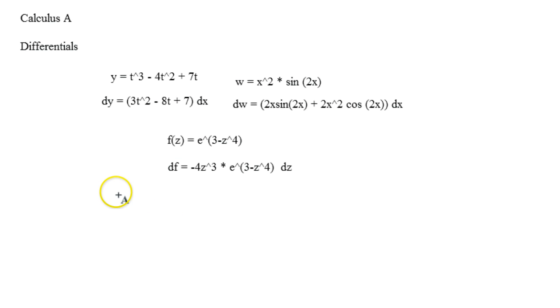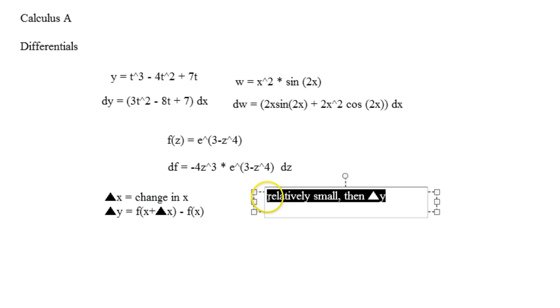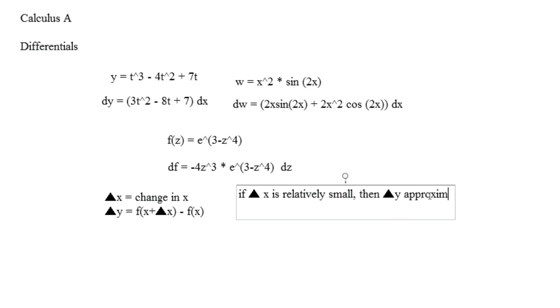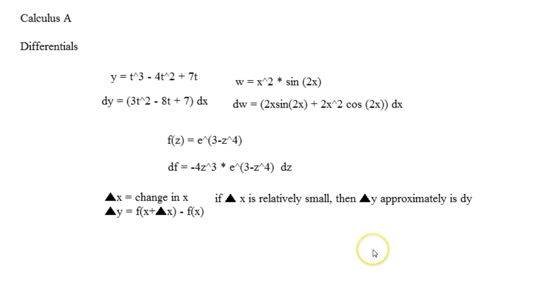Now, amazingly enough, if we think of our formulas as delta x as the change in x and delta y as f of x plus delta x minus f of x - if you remember, that's from the difference quotient - if delta x is relatively small, then we can assume delta y approximately is dy. So this is kind of a cool little thing to just know as well for differentials.